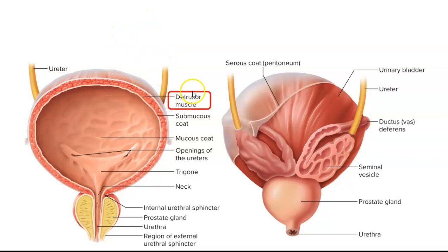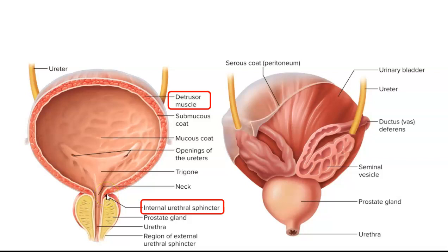The bladder contracts by the detrusor muscle — smooth muscle in a few layers that contracts when your bladder gets full of urine. There's also the internal urethral sphincter, which is involuntary and will relax on its own. And then there's the external urethral sphincter, which is further down. We're also looking at the male bladder here because this is the prostate gland — the urethra travels right through the middle of the prostate gland.